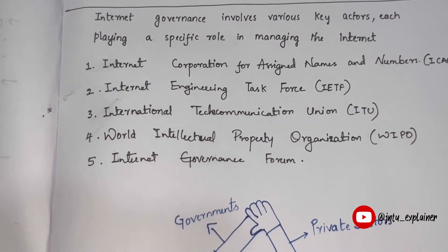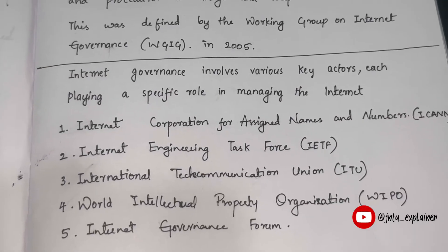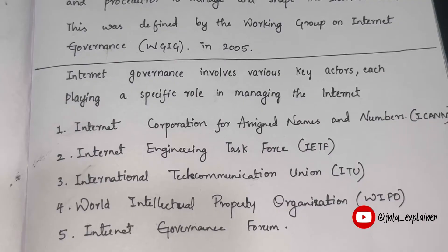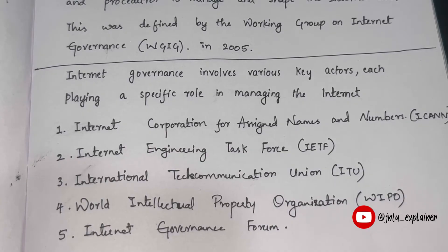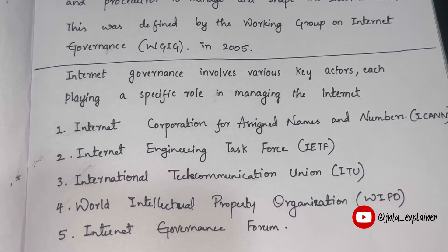The first key actor is the Internet Corporation for Assigned Names and Numbers, ICANN. ICANN is responsible for coordinating the global Domain Name System, or DNS. DNS is a protocol in networking where you can search for anything using a domain name instead of an IP address. For example, my channel has one IP address, but instead you search me using 'JNTU Explainer' — that's DNS. ICANN is responsible for this.